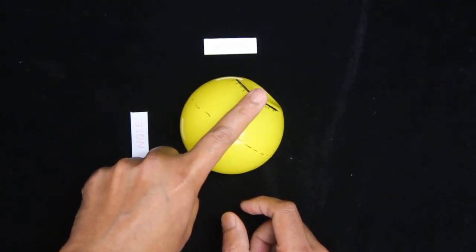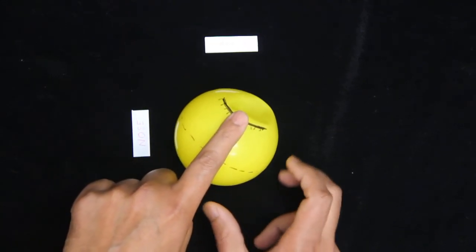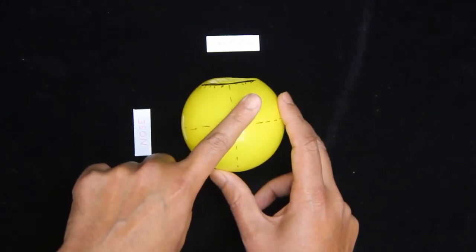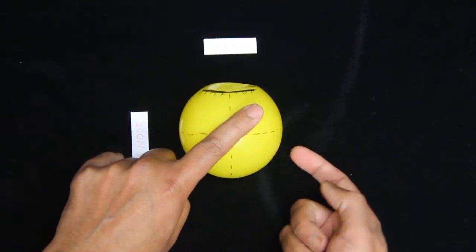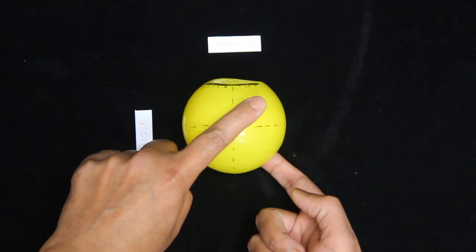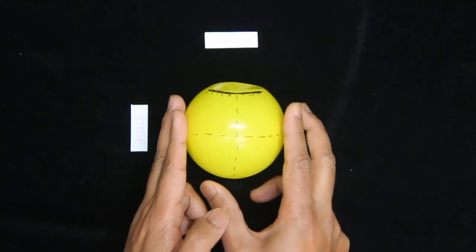And then the superior rectus can easily elevate the eyeball. Otherwise, if he wants to elevate, he needs help from another muscle, which is called inferior oblique. They both together can elevate the eyeball.